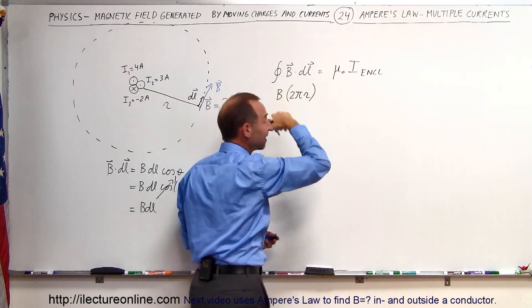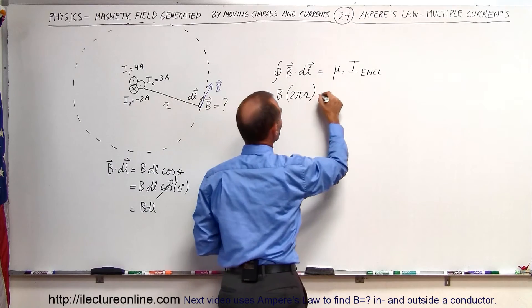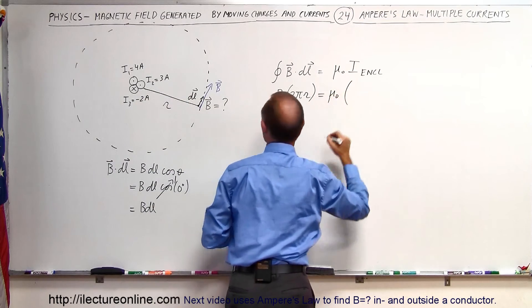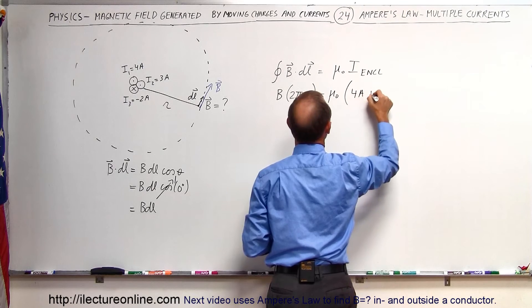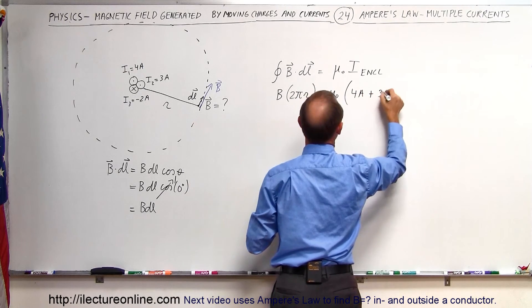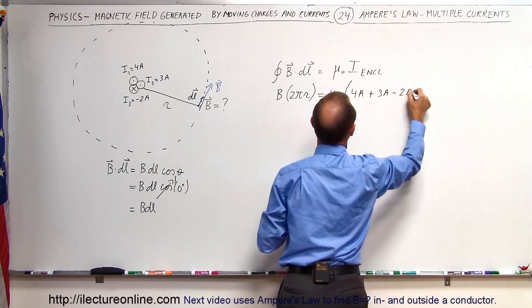That's the length of the path, that's the circumference of a circle. That's going to be equal to mu sub nought times the sum of all the currents included, which is a positive 4 amps plus a positive 3 amps minus 2 amps.